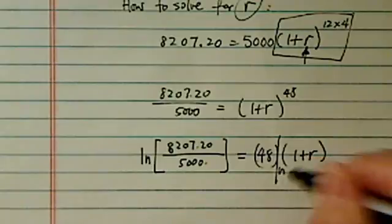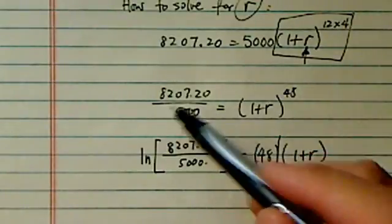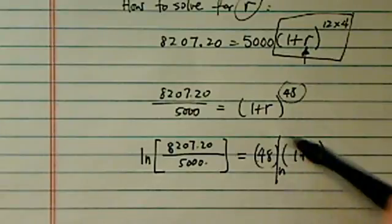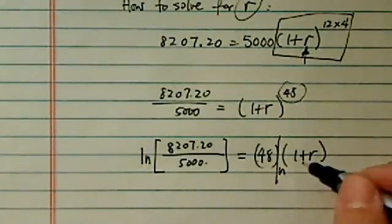Okay, so I have natural log of this part. So basically, I took a natural log on this side, 48 come in front, and this natural log of 1 plus R. It's not a very pretty looking thing.